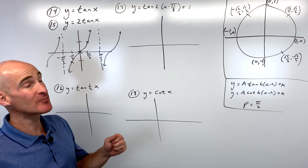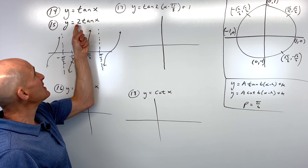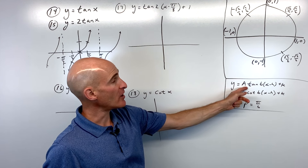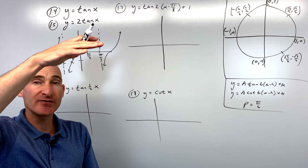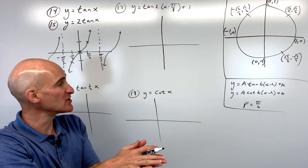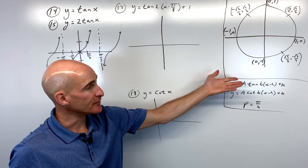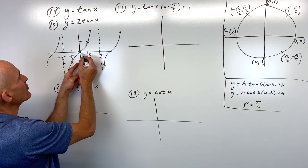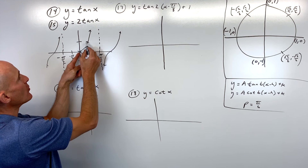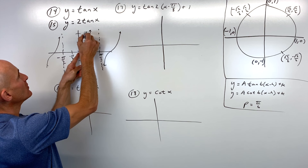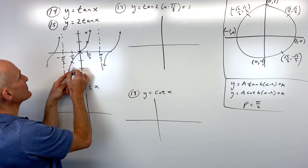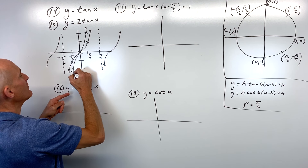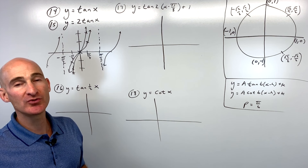For number fifteen, y equals two tangent of x — what does the two do? The two is the coefficient in front, giving a vertical stretch if it's greater than one. Two times zero is still zero, one times two is two, and negative one times two is negative two. So the graph is stretched vertically — going up faster, two times faster. For number sixteen, y equals tangent of one-half x — the b value is one half, so the period is pi divided by one half, which is two pi.